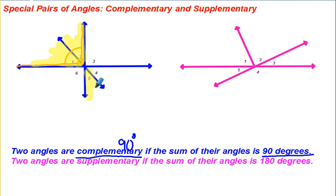Angle 5 and angle 4 are also considered complementary because the sum of their angles is 90.